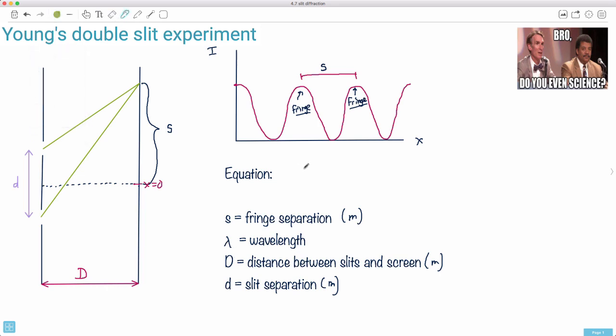We have a formula for this which is really nice: s equals lambda D over d. I like this version because it puts this together really nicely. You can figure out your fringe separation depending on your wavelength, the distance, and your slit separation, which is nice because you can start answering lots of conceptual questions.